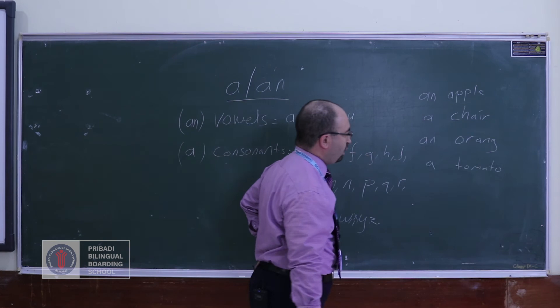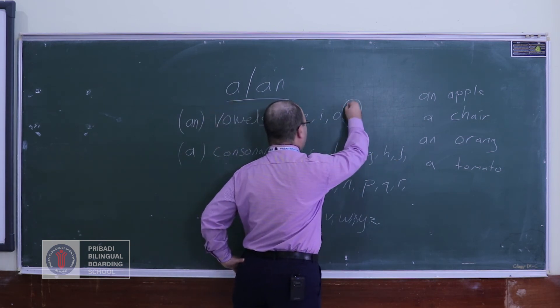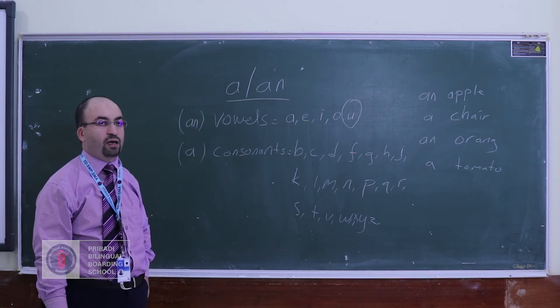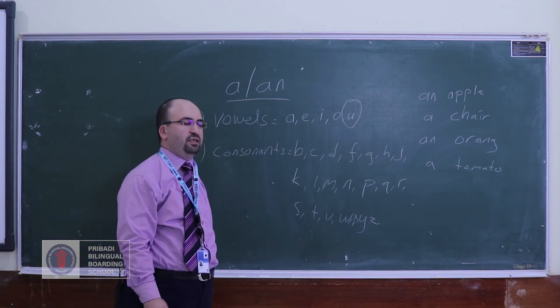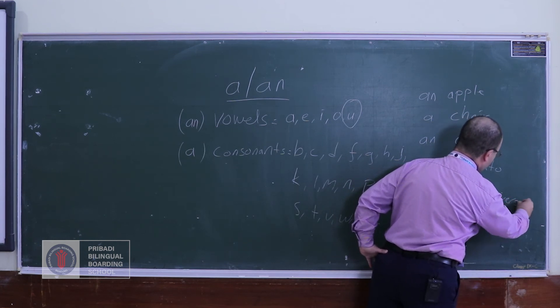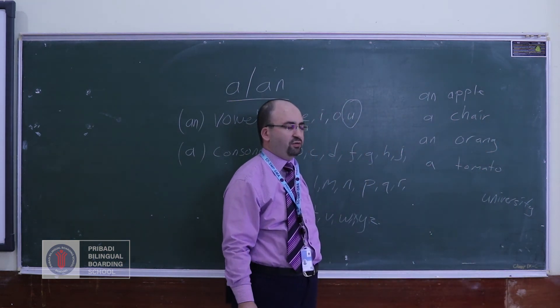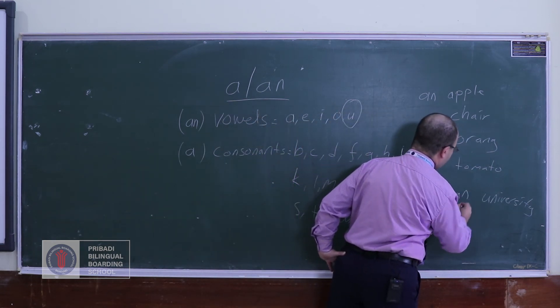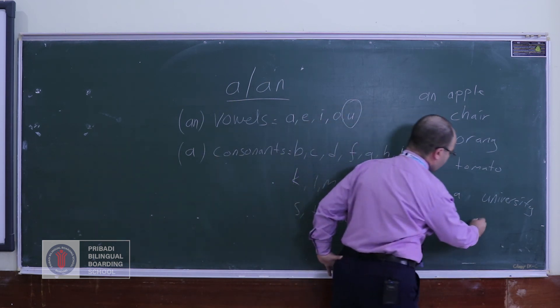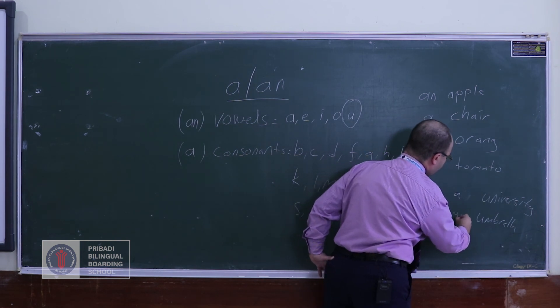The only thing, the only letter we have a little bit of a problem with is u, because u is pronounced sometimes as a u sound or sometimes starts with a y sound. Like university—when we pronounce it we first say y sound, so we use it with 'a'. And umbrella, it starts with a u sound, so we use it with 'an', right?